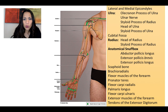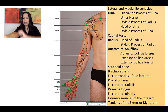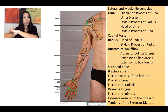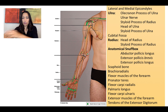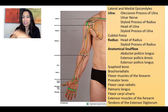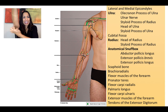We can palpate the medial and lateral epicondyle — we did this last class. The medial and lateral epicondyles are where the muscles of the forearm attach. The medial epicondyle is where the anterior forearm muscles attach, and the lateral epicondyle is where the posterior group of muscles attaches.